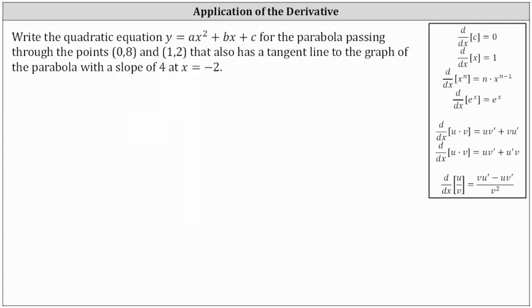Let's first begin with the points. If these points are on the parabola they must satisfy the equation y equals ax squared plus bx plus c. Notice how the point (0,8) is the vertical y-intercept and therefore c is equal to 8. We can show that by substituting 8 for y and 0 for x into the equation, which simplifies to 8 equals c.